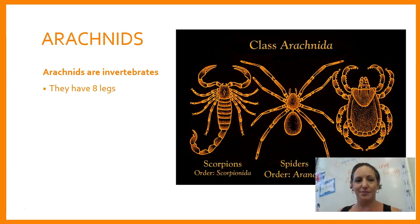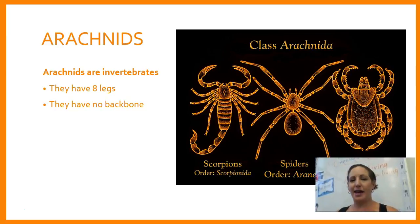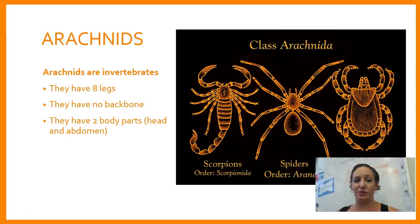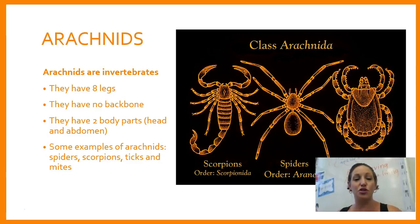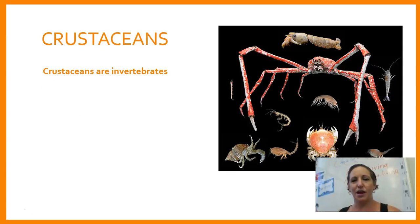Arachnids are invertebrates. They have eight legs, no backbone, and two body parts: the head and the abdomen. Some examples of arachnids are spiders, scorpions, ticks, and mites.